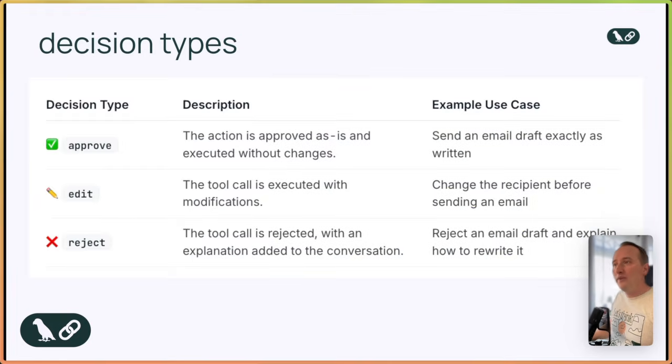At this point, the human reviewer can respond in three ways. We call these decision types.